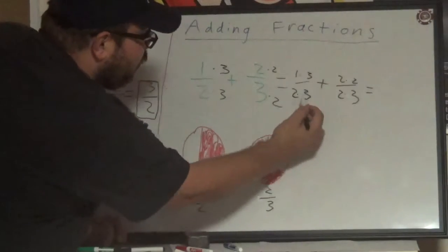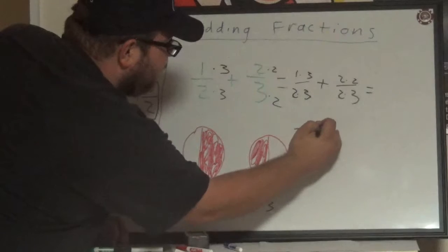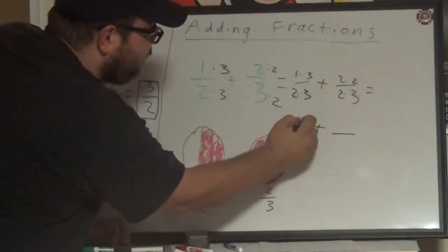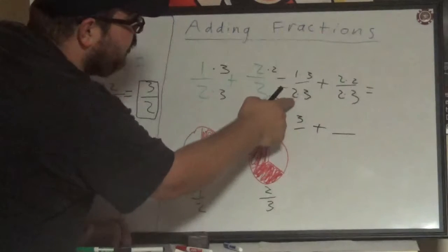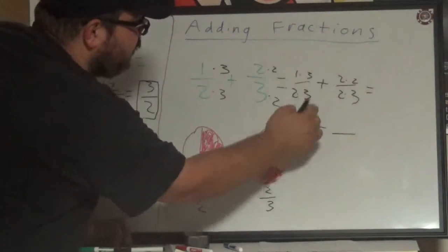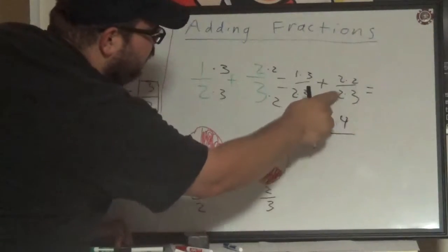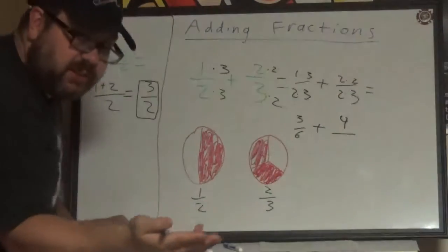So I'm going to rewrite this problem simplified. One times three is three, two times three is six, two times two is four, and two times three of course is still six.